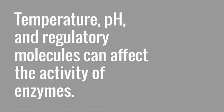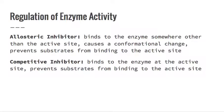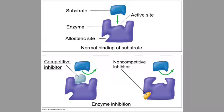Enzymes are regulated by two types of inhibitors: an allosteric inhibitor and a competitive inhibitor. An allosteric inhibitor binds somewhere other than the active site, while a competitive inhibitor binds to the enzyme at the active site.